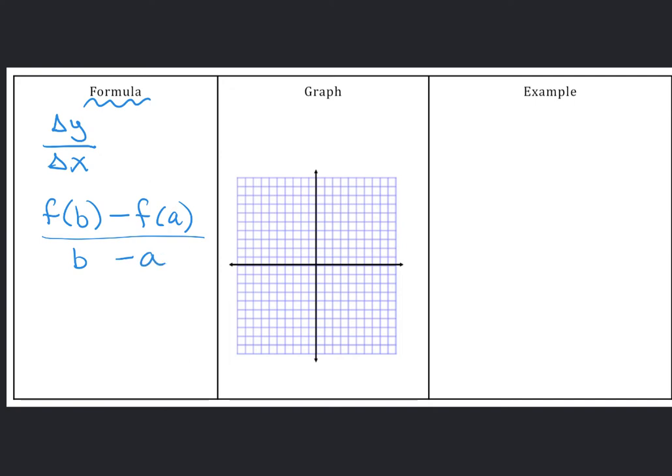Now, in algebra 1, what we did is we just called this finding the slope between two points. And we called it y2 minus y1 over x2 minus x1. So that should definitely look familiar. This is just kind of the more formal way to write it. And this is called the difference quotient.